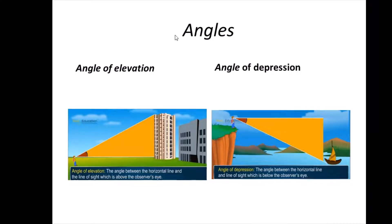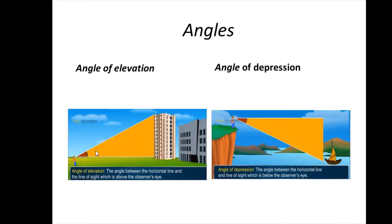The angles used in trigonometric ratios are the angle of elevation and the angle of depression. Suppose a boy is standing on the ground and looking upward at a building. The angle between the horizontal line and the line of sight is the angle of elevation.